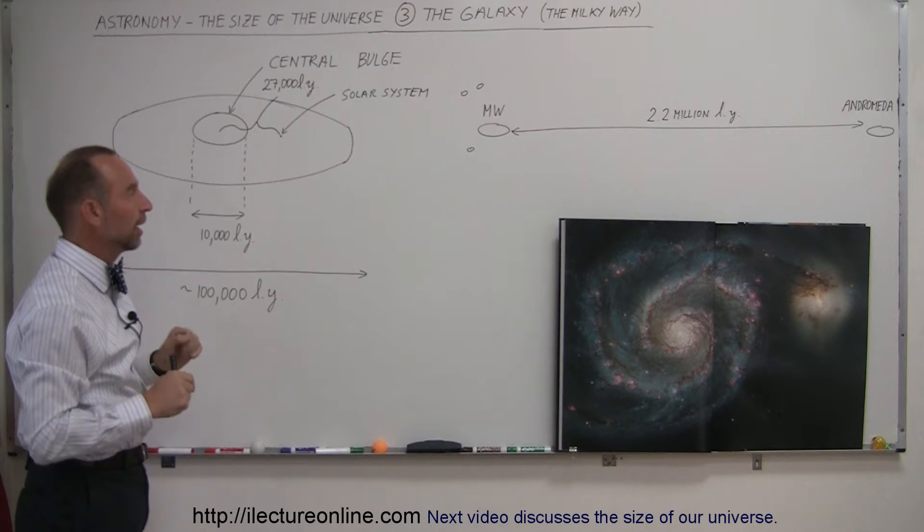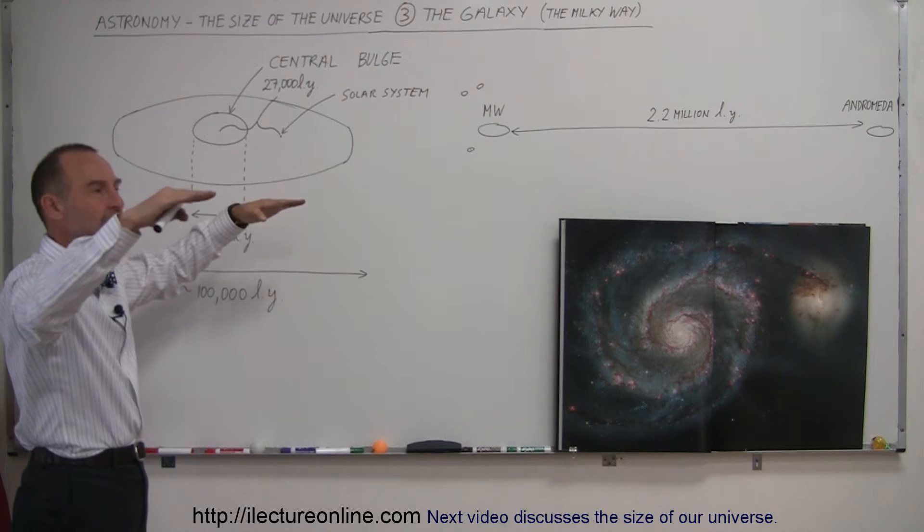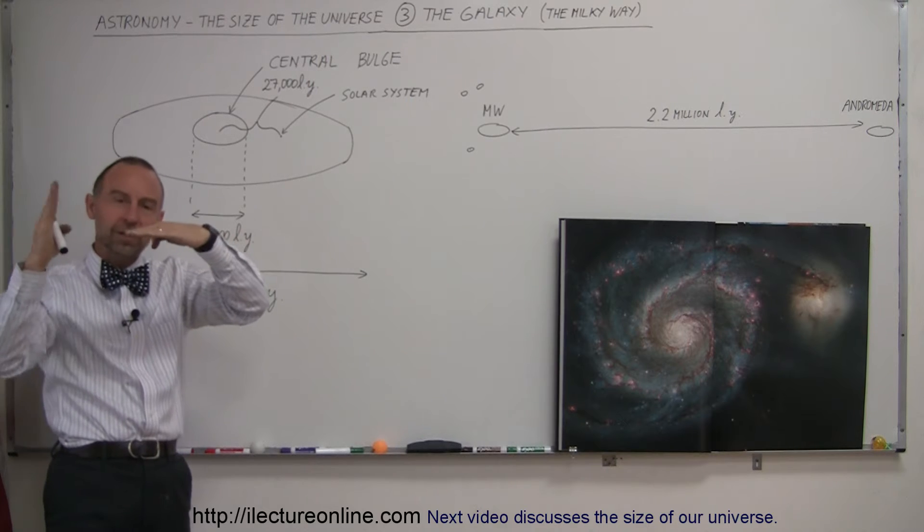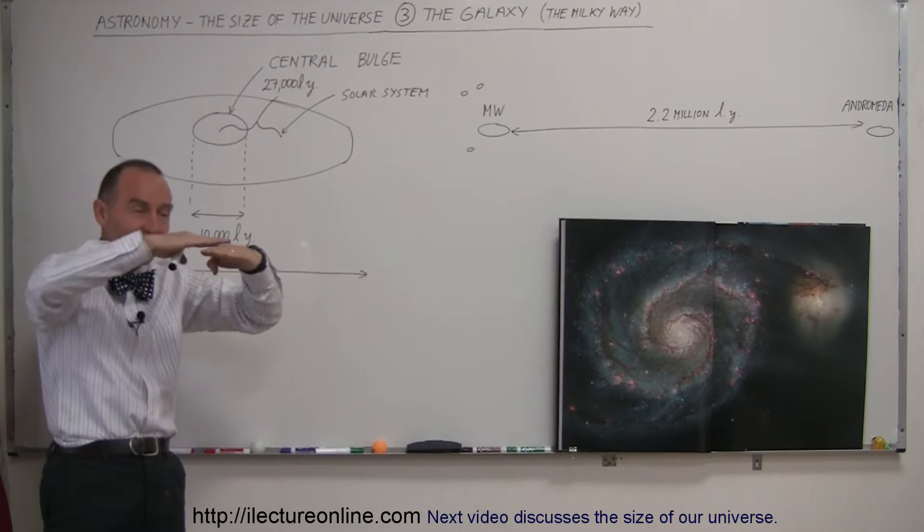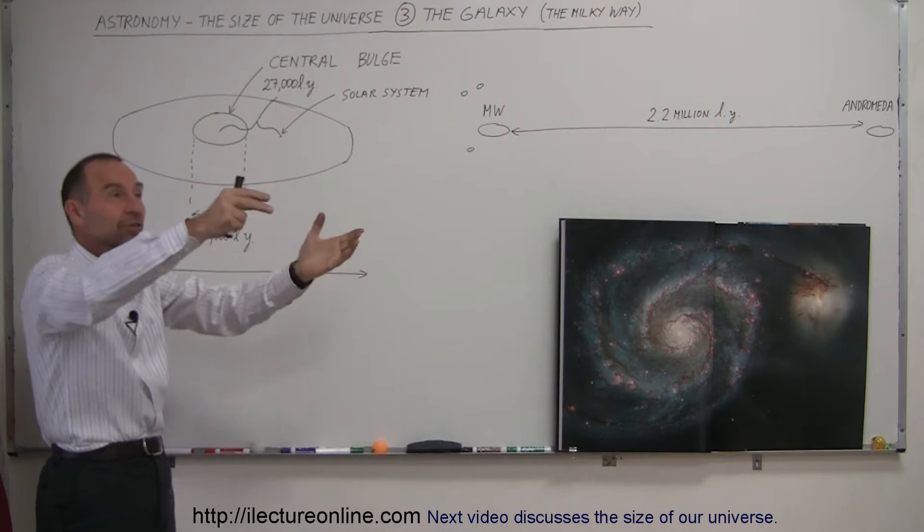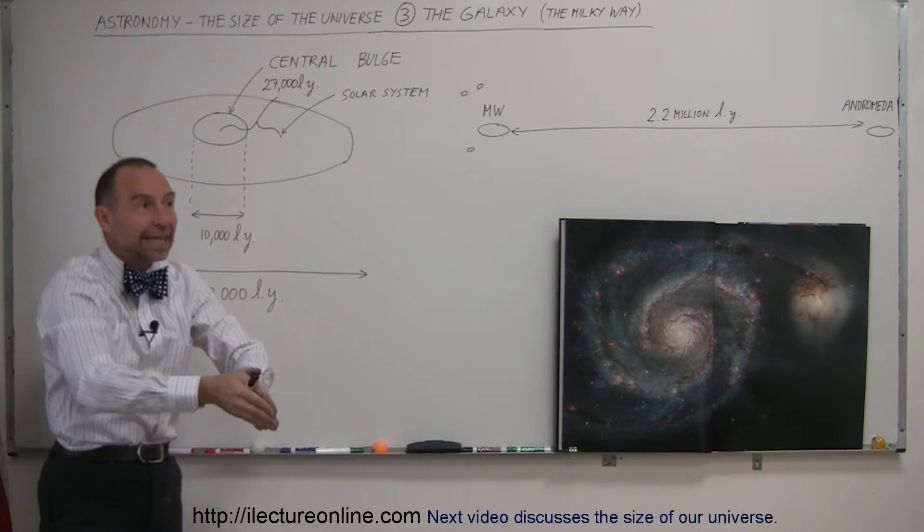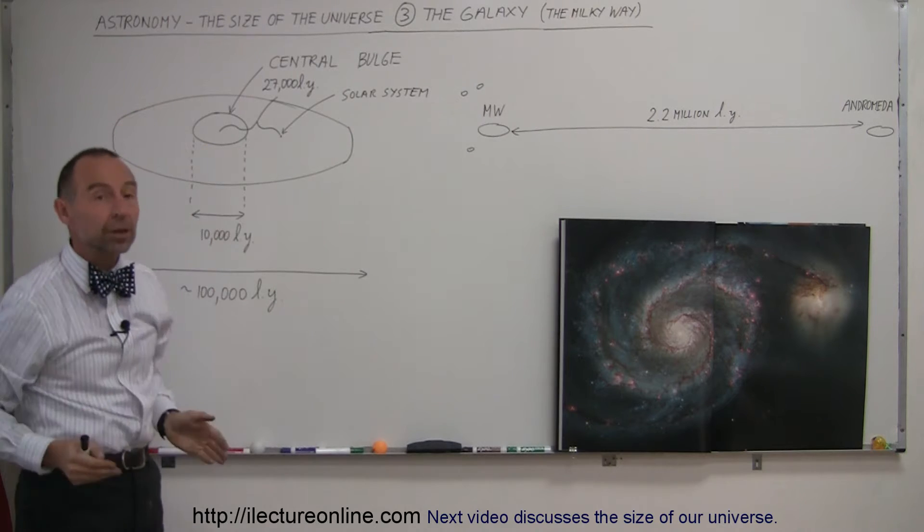And so when you're inside this pancake shape and you look straight up or straight down, you don't see a lot of stars. But when you look in the direction of the disk itself, there's stars as far as the eye can see in all directions. And so we see that glow of light across the sky that is looking in the direction of the disk of the Milky Way galaxy.